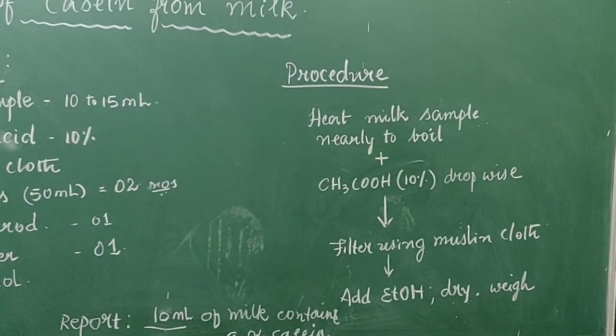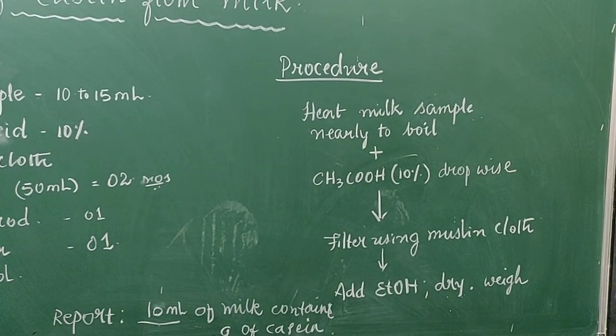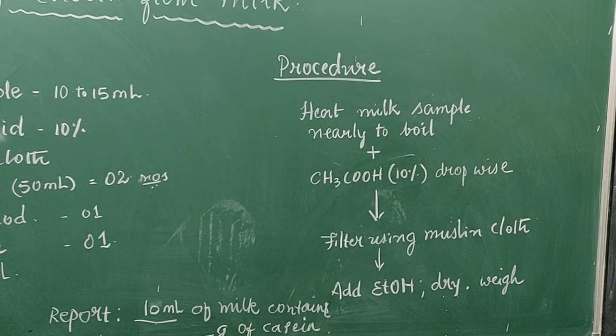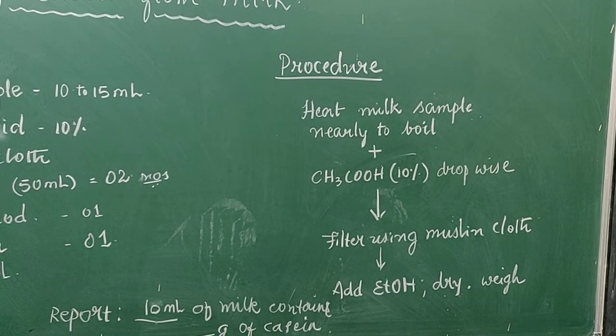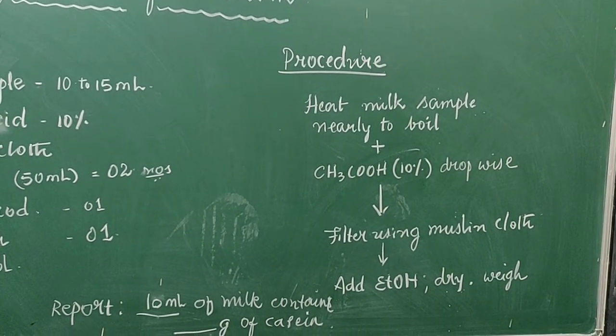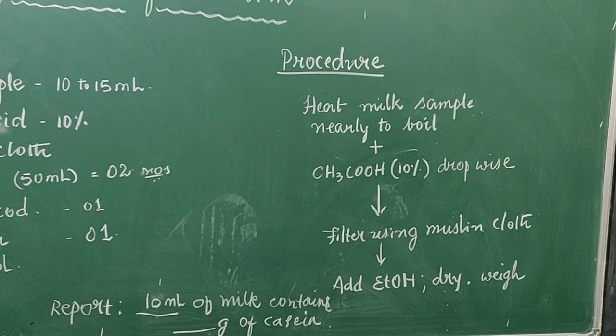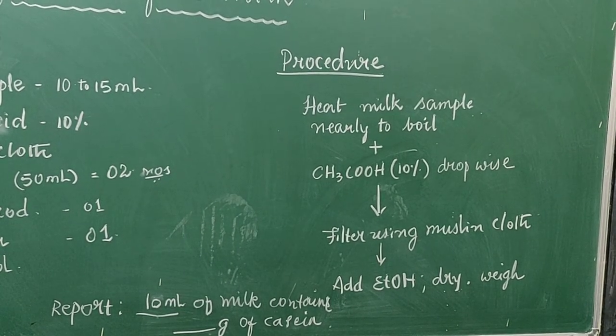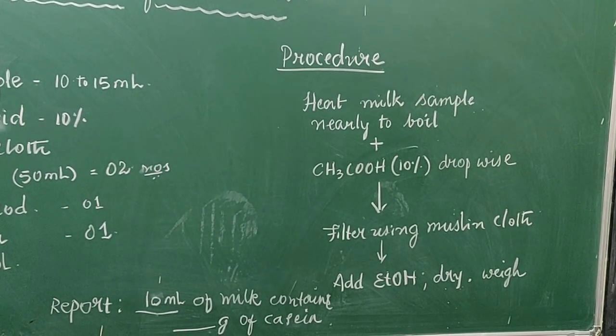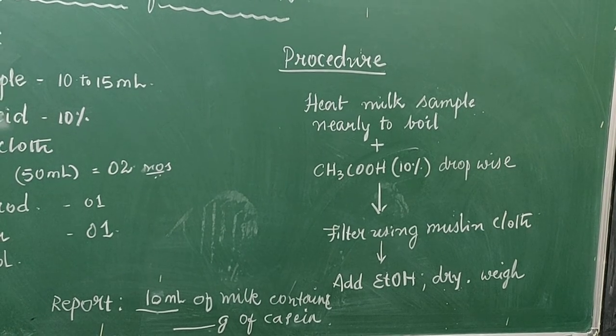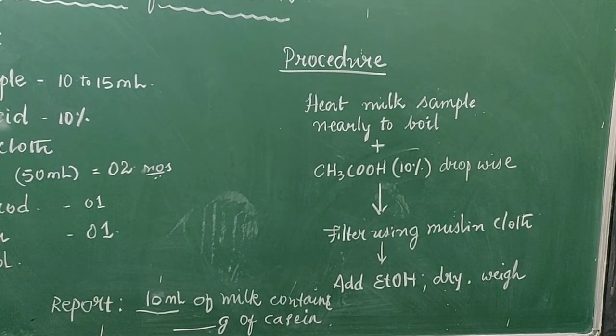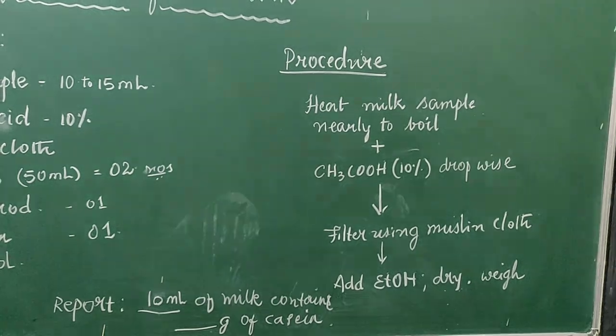The procedure is as follows. Heat the milk sample nearly to boil. Then add acetic acid drop wise until curdling occurs. Then you are supposed to filter it using muslin cloth. And to remove the adhering fat, we are going to add alcohol. Dry it by squeezing and then weigh.